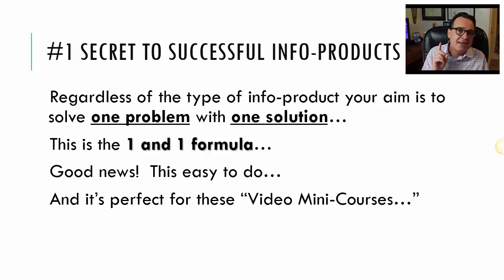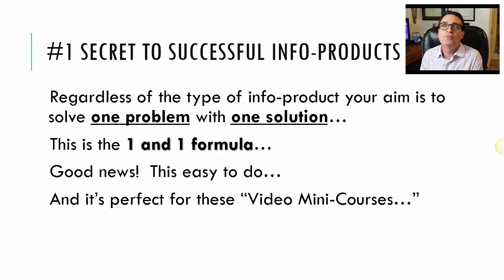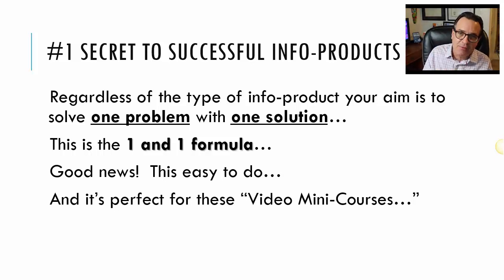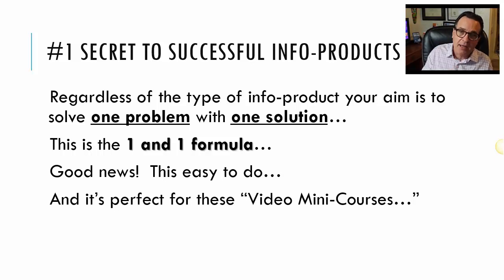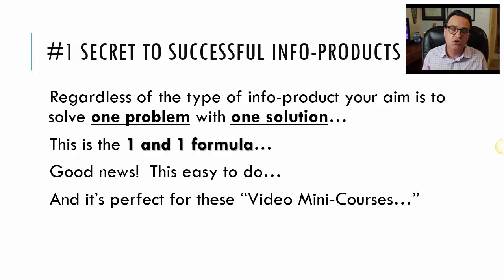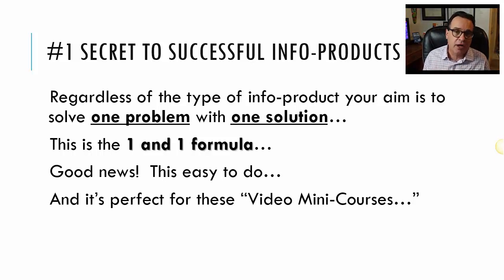Let's jump into that right now. I want to give you my number one secret to creating a successful info product, and it's a really important thing that you understand: regardless of the type of information product you aim to make, you are solving just one problem with one solution. People buy information products to solve their problem. So look at the marketplace that you wish to serve, look at one of their main problems, and choose one solution that you have. I call this the one-and-one formula.